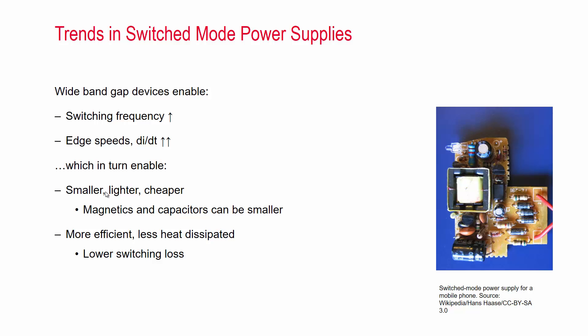The magnetics and the capacitors can be smaller if you switch them more frequently. And the high edge speeds enable high efficiency, there is less heat dissipated when you have lower switching losses when the transistors make the transition more quickly.